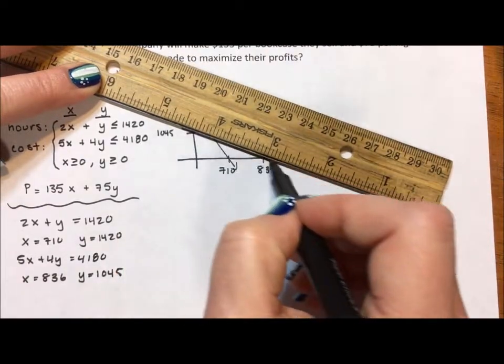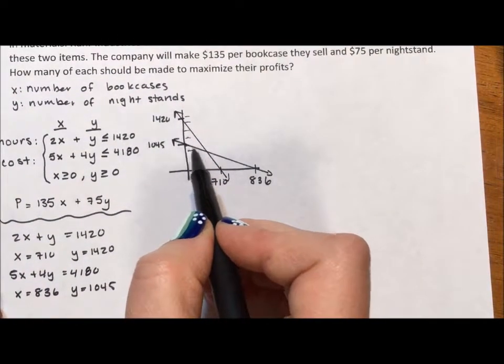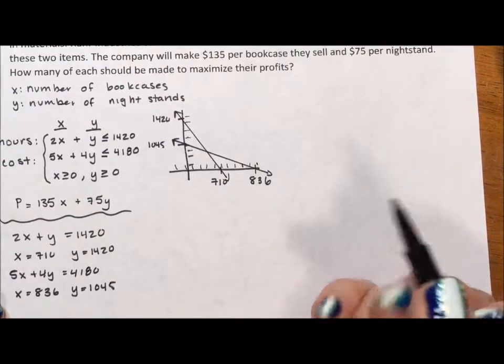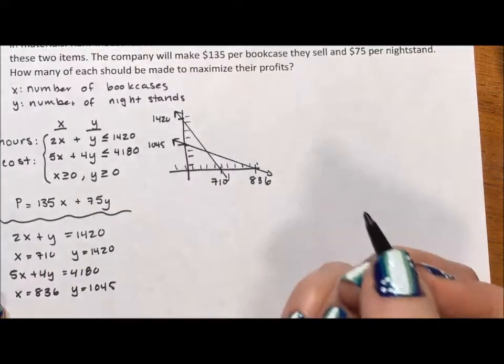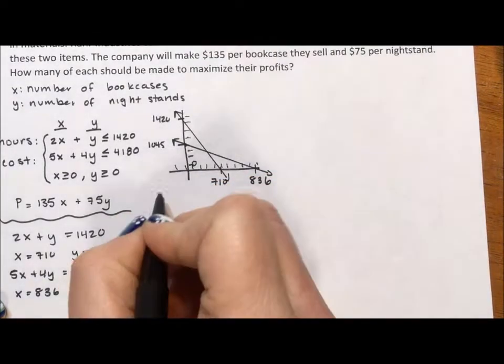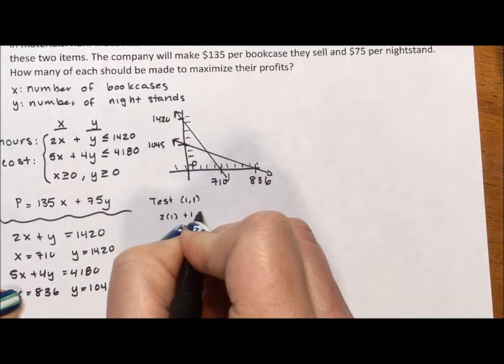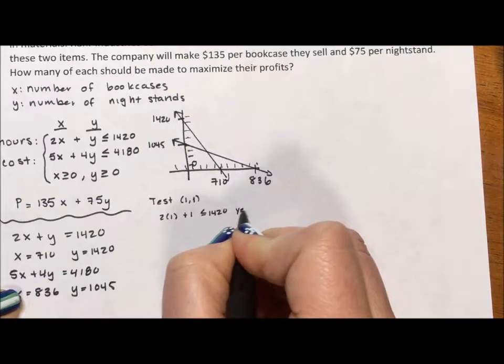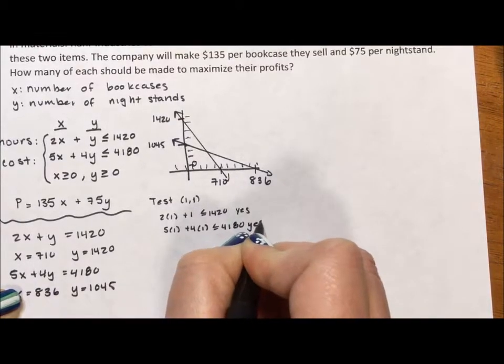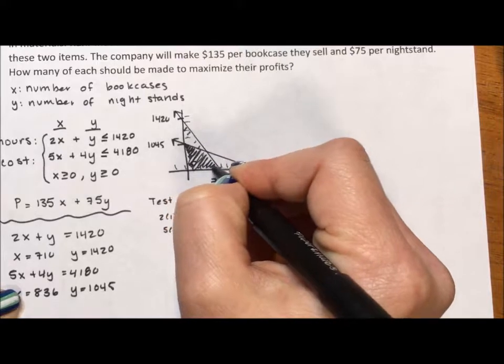And the last two equations that I have, x is greater than or equal to 0, just means that we stay to the right. And y is greater than or equal to 0 says we stay above, forcing us to stay in the first quadrant. To figure out which of these four regions I'm going to shade, I'm going to do a little bit of testing. I'm going to test the point (1, 1). Is 2 times 1 plus 1 less than or equal to 1420? Yes. Is 5 times 1 plus 4 times 1 less than or equal to 4180? Yes. Which means both lines shade towards the origin.